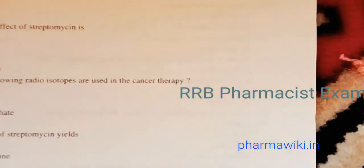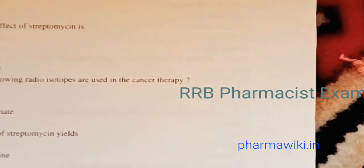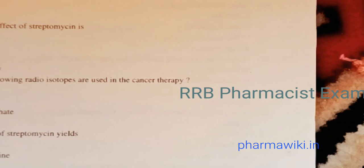Question 72: Which of the following radioisotopes are used in cancer therapy? The answer is all of the above — sodium iodide, radio gold, and sodium phosphate are all used as radioisotopes. Question 73: Acid hydrolysis of streptomycin yields streptidine and streptobiosamine.